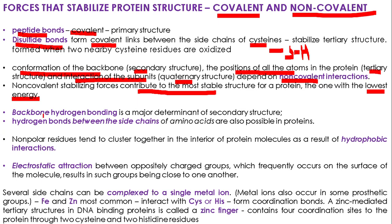What are the different types of non-covalent interactions? One interaction is hydrogen bonding. Backbone hydrogen bonding is a major determinant of secondary structure. The backbone consists of a CO group and an NH group. The CO group of one chain may engage in hydrogen bond formation with the NH group of another chain, or with a different part of the same chain. We found in previous classes that this is important in the formation of alpha-helix and also beta-pleated sheets.